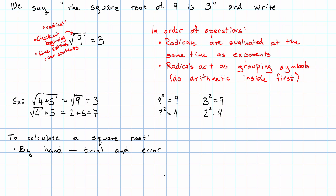To calculate a square root by hand, we'll use trial and error. So that just means, say I want to take the square root of 49.